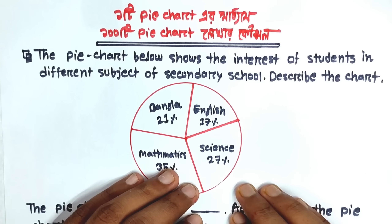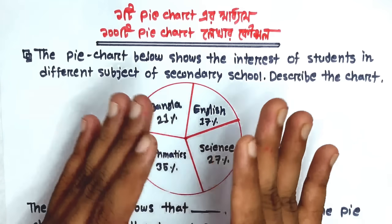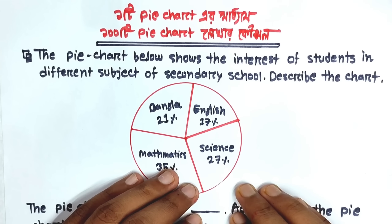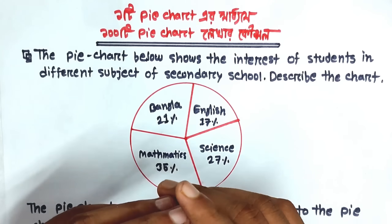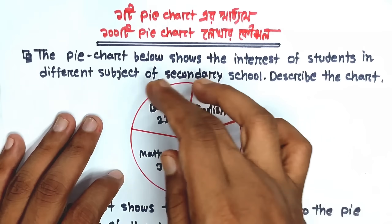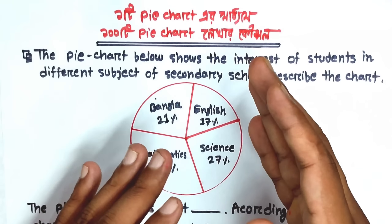If you have any class 9 or class 10, you can relate to this. If you have any question, you can see a graph chart. If you have any sort of chart, you will have to learn some — just pie chart. One is graph chart and one is pi chart. So I'm going to teach you the same thing. And graph chart has a red line where you mark things like literacy rate.